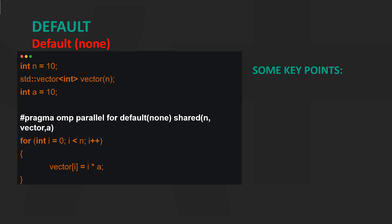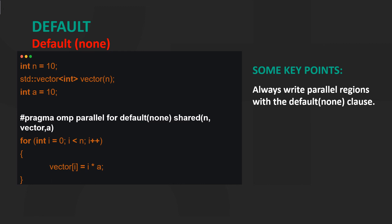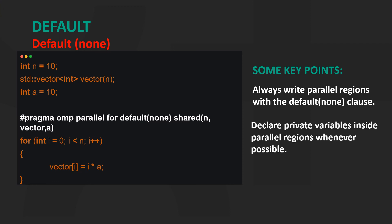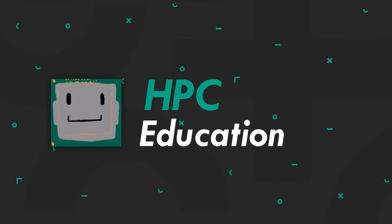Some key points to remember: always write parallel regions with the default none clause — this forces the programmer to explicitly think about the data sharing attributes of all variables. And always declare private variables inside parallel regions whenever possible, as this improves the readability of code and makes it clearer. That's all for this video; see you again in the next one.